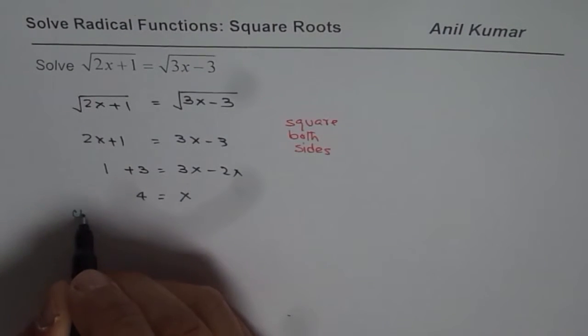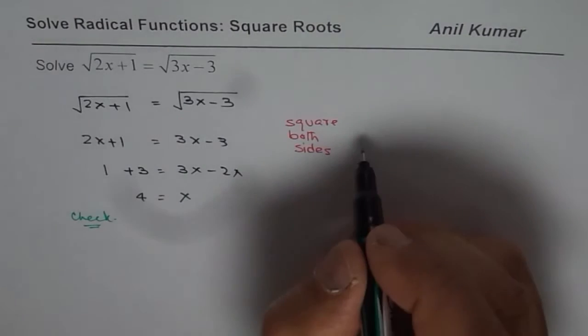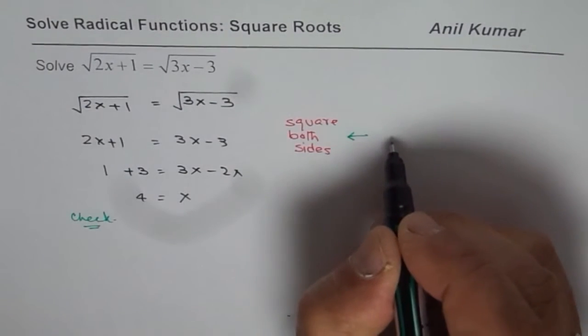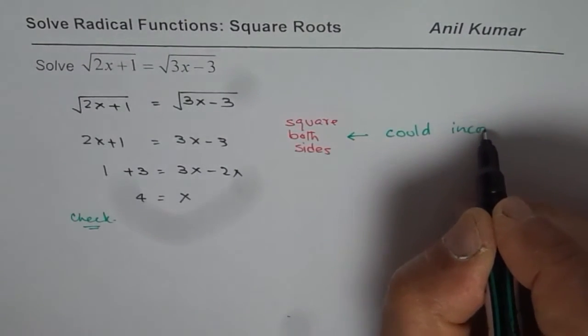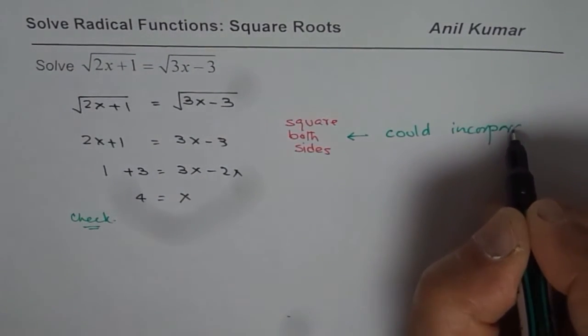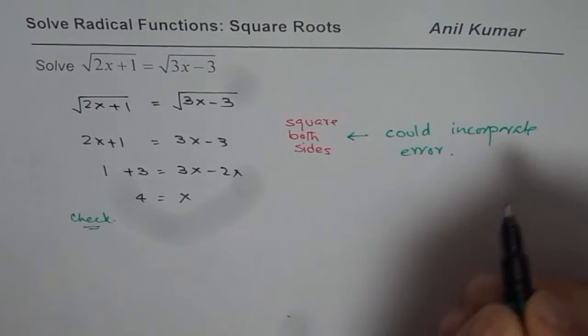We should always check the solution whenever we're working with square root functions. The idea is, whenever you square both sides, you could incorporate error. Because negative squared is also positive, that is the reason.